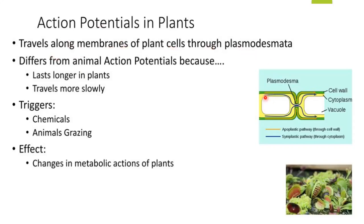These action potentials in a plant cell travel along the plasmodesmata from cell to cell, as you can see in the diagram. This action potential in plant cells differs from animals in that it lasts longer in plants and travels more slowly, whereas the opposite is true in animal cells, as discussed in previous lessons.